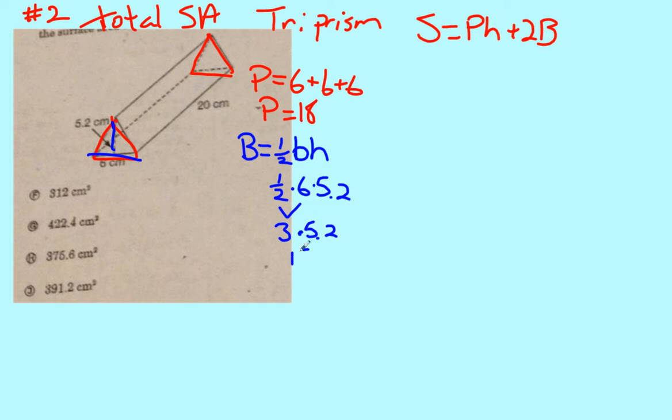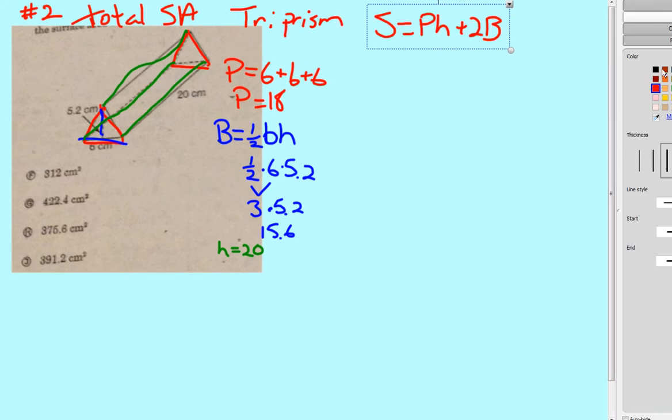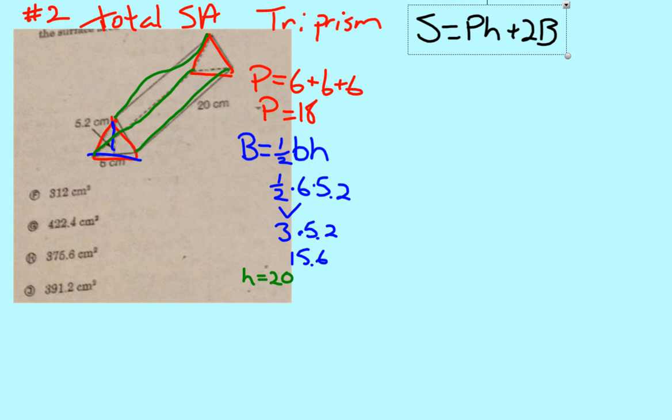Last thing we need is the height of the prism. Remember, height of the prism is distance from one base to the other - that's this green length here, which is just 20. So then we fill in our numbers here and change the color so we can color code nicely. We said that our perimeter was 18, the height of our prism was 20.